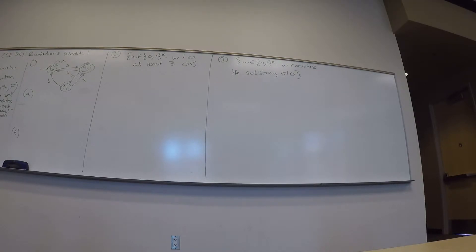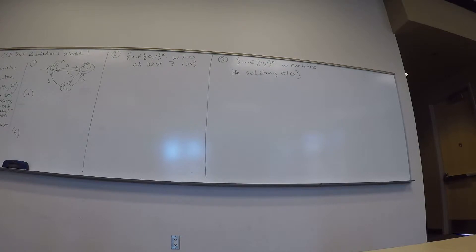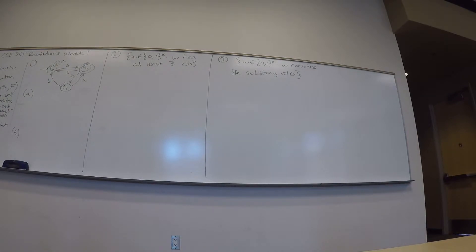Now that we have the first three, what's the fourth one — Q0? That's called the start state of the machine. And what do we know about Q0 in relation to other things? Q0 is a member of Q — it's in Q.